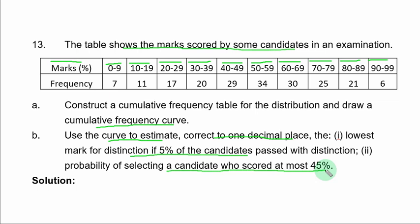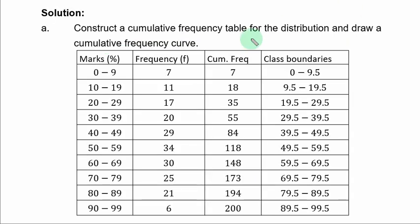In order to draw a cumulative frequency curve, we need to add two additional columns to this table: cumulative frequency and class boundaries. You plot cumulative frequency curve by plotting cumulative frequency against the upper class boundaries.